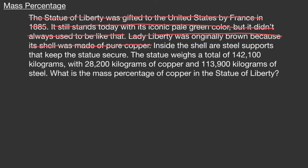Now in this sentence, we get some measurements that might be useful in constructing a picture for the problem we are trying to solve. The entire statue weighs 142,100 kilograms, and we know it's made out of two things: 28,200 kilograms of copper and 113,900 kilograms of steel. The last sentence gives us our objective: what is the mass percentage of copper in the Statue of Liberty?